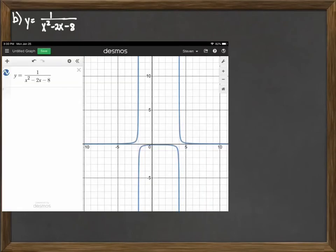Let's consider this second function here. This is a rational function, y equals 1 over x squared minus 2x minus 8. And again we want to take a look at the graph. So we'll go ahead here and plug in the graph.